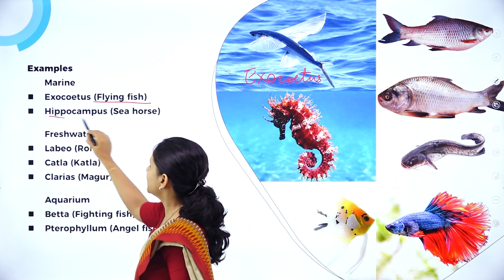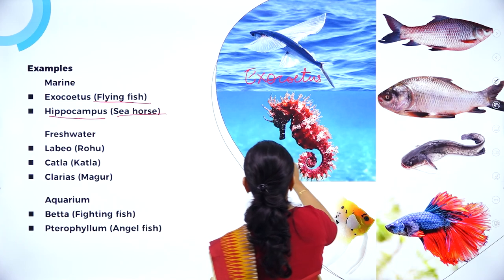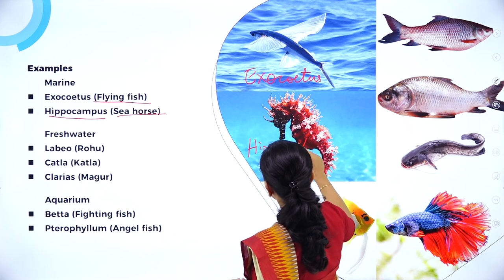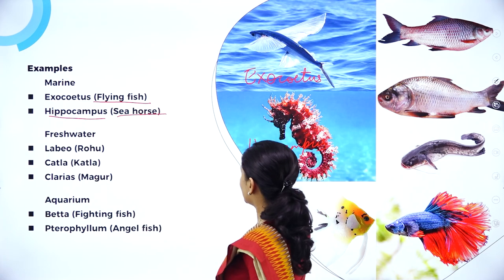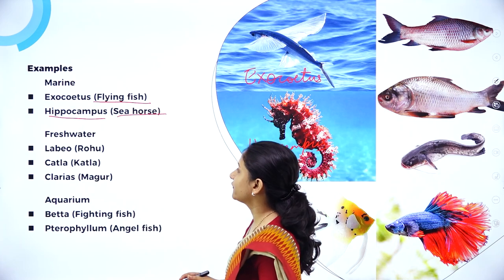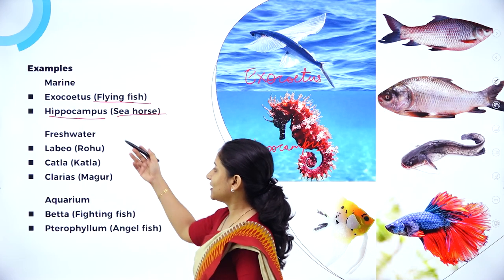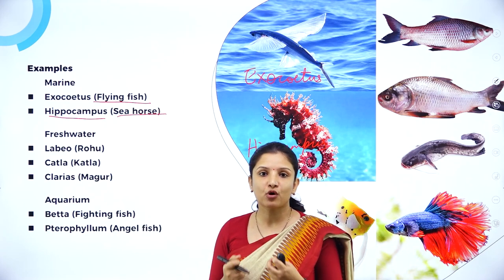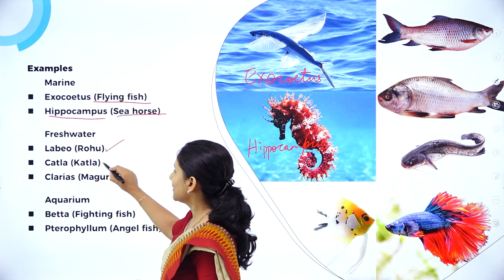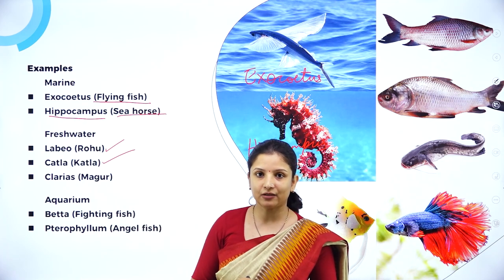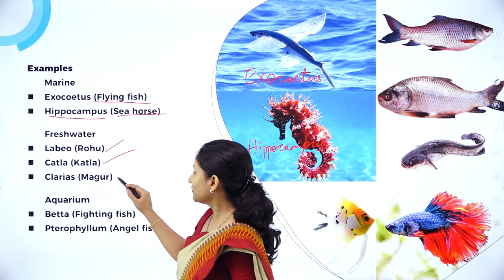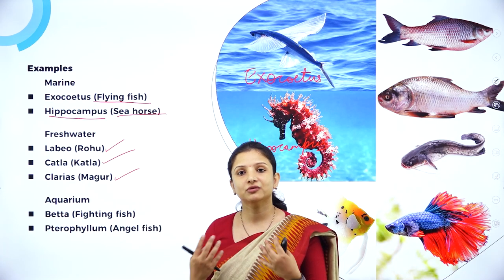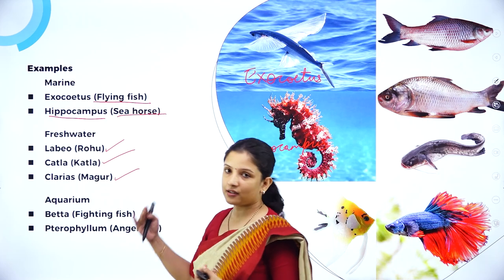Next is Hippocampus, commonly called the seahorse — it looks like a horse, hence the name. Among freshwater fishes, which are also of commercial importance, there are Rohu and Katla, two important fishes that we consume. There is also Magur, which looks like a catfish and is consumable, though not consumed to the same extent as Rohu and Katla.